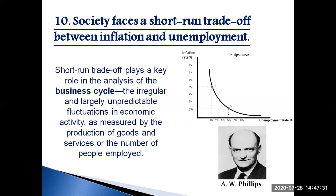Policy makers can exploit the short-term trade-off between inflation and unemployment using various policy instruments. By changing the amount the government spends, the amount of taxes, and the amount of money it prints, policy makers can influence the overall demand for goods and services. Changes in demand in turn influence the combination of inflation and unemployment that the economy experiences in the short run. Because these instruments of economic policy are potentially so powerful, how policy makers should use them to control the economy — if at all — is a subject of continuing debate.